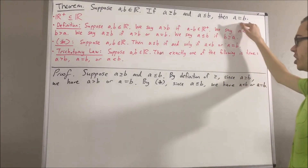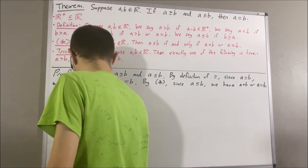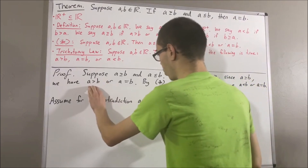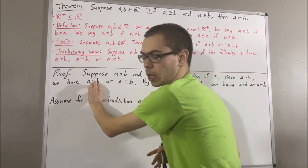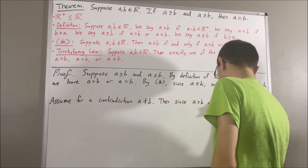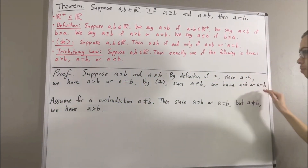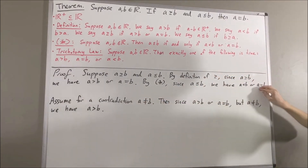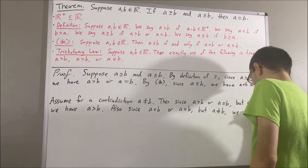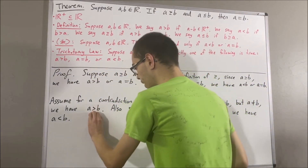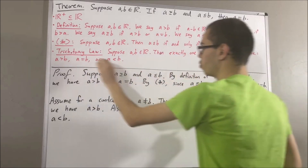Now, remember, the whole goal is to show that a is equal to b. To show that, assume for a contradiction that a is not equal to b. Since a is greater than b or a is equal to b, but a is not equal to b, that eliminates the possibility that a equals b. So we must have that a is greater than b. Also, since a is less than b or a is equal to b, but a is not equal to b, that eliminates the possibility that a equals b. So we must have that a is less than b. And so we have both a is greater than b and a is less than b, but that contradicts the trichotomy law, which says that exactly one of these must be true.